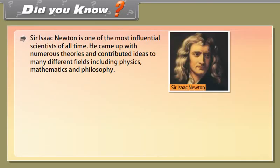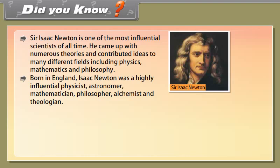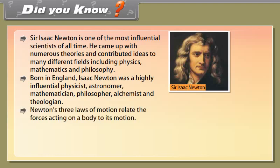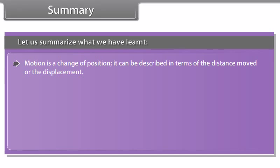Assessment: Now time for an interactivity — click the correct option. Did you know? Sir Isaac Newton is one of the most influential scientists of all time. He came up with numerous theories and contributed ideas to many different fields including physics, mathematics, and philosophy. Born in England, Newton was a highly influential physicist, astronomer, mathematician, philosopher, alchemist, and theologian. Newton's three laws of motion relate the forces acting on a body to its motion. John Kepler helped lead a scientific revolution in the 17th century with his work in astronomy, including his three laws of planetary motion.